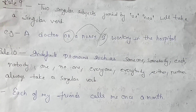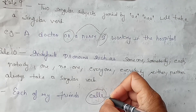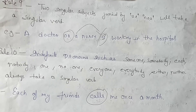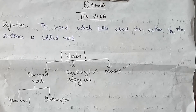Rule number ten: indefinite pronouns — someone, somebody, each, nobody, one, no one, everyone, everybody, either, neither — always take a singular verb. For example: 'Each of my friends calls me once a month.' The verb 'calls' is singular. So with each, everybody, either, neither, everyone — we always use a singular verb. That's all for today's class on verbs and their rules. More rules will be covered in the next session, along with verb error detection. If you liked the class, please like, comment, subscribe to the channel. Thank you so much for watching.